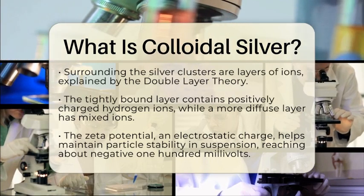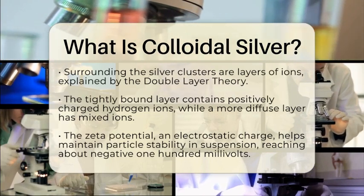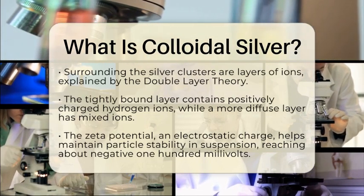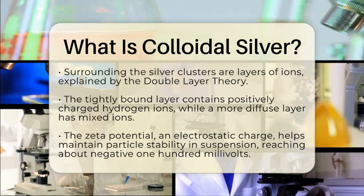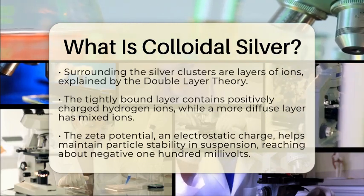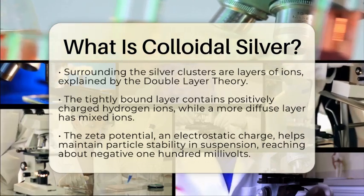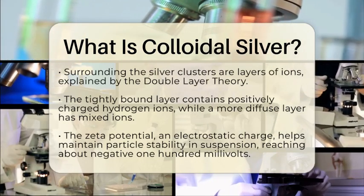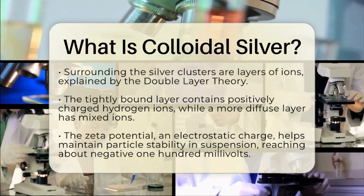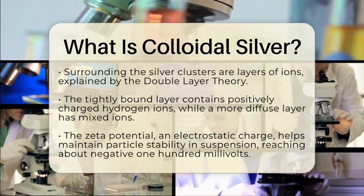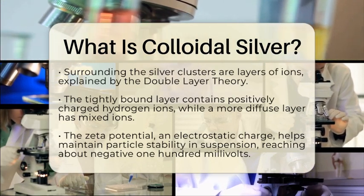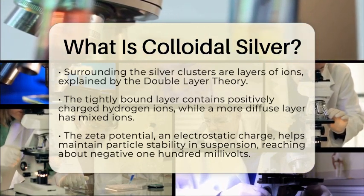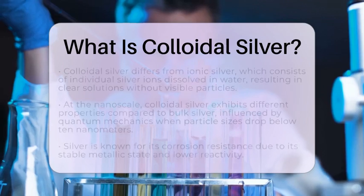This charge can reach around negative 100 millivolts. It is important to differentiate colloidal silver from ionic silver. Ionic silver contains individual silver ions, which are single silver atoms that carry a positive charge and are dissolved in water. Like colloidal silver, ionic silver solutions are clear and do not have visible particles.